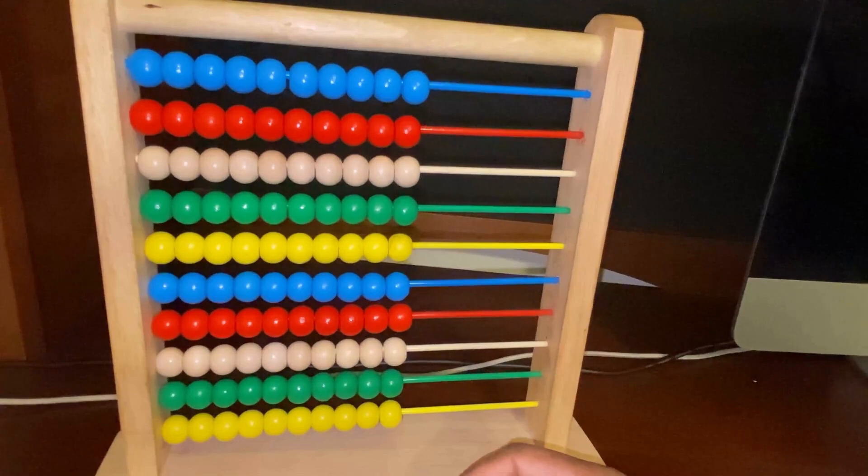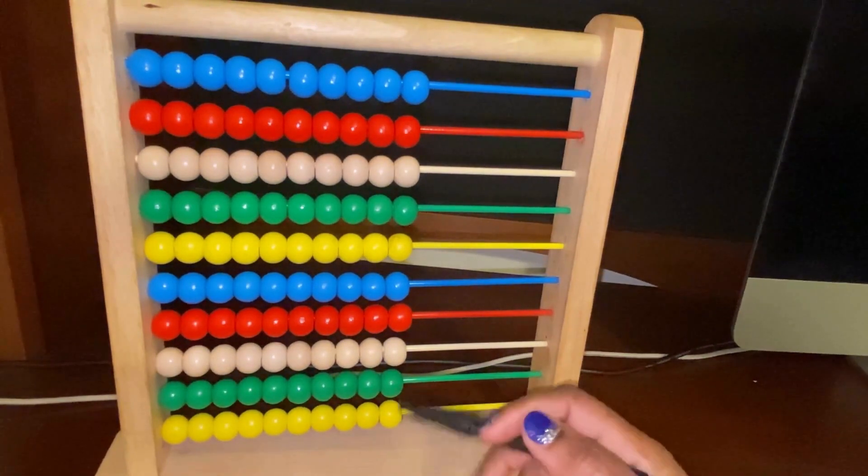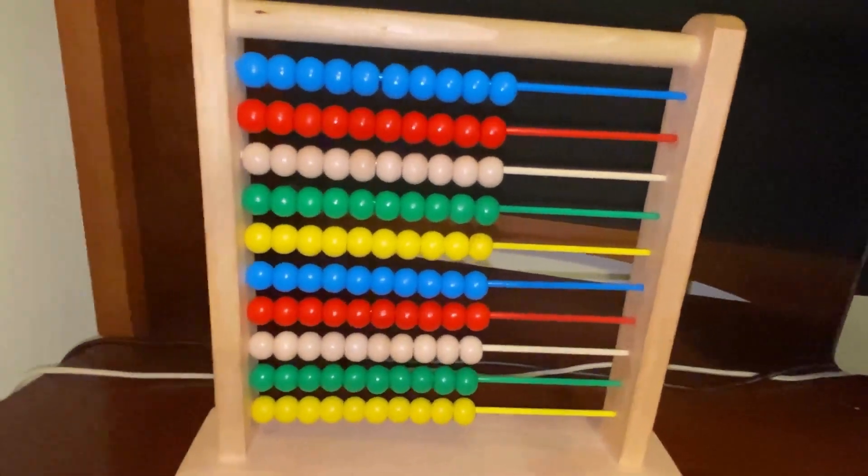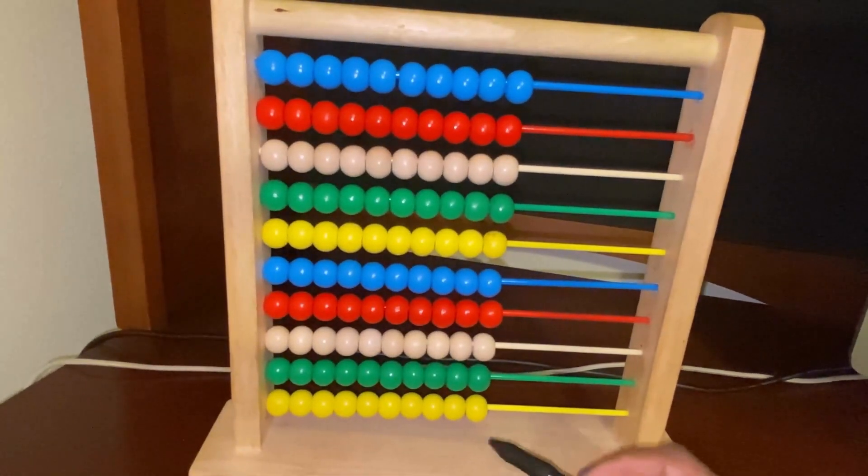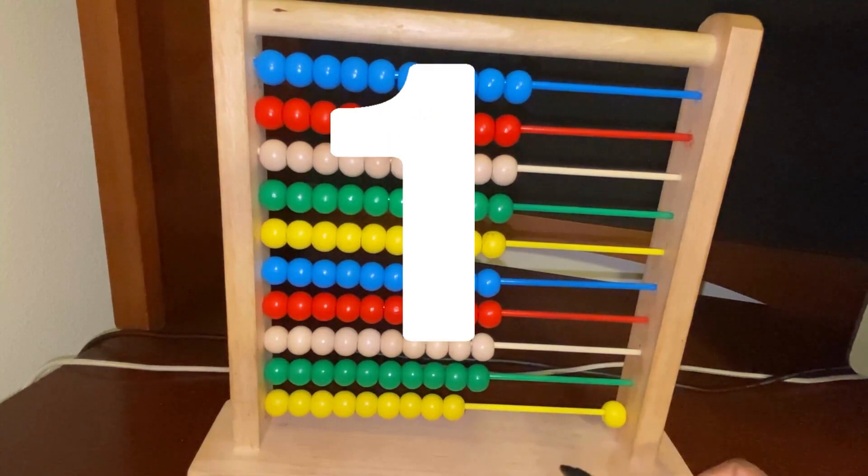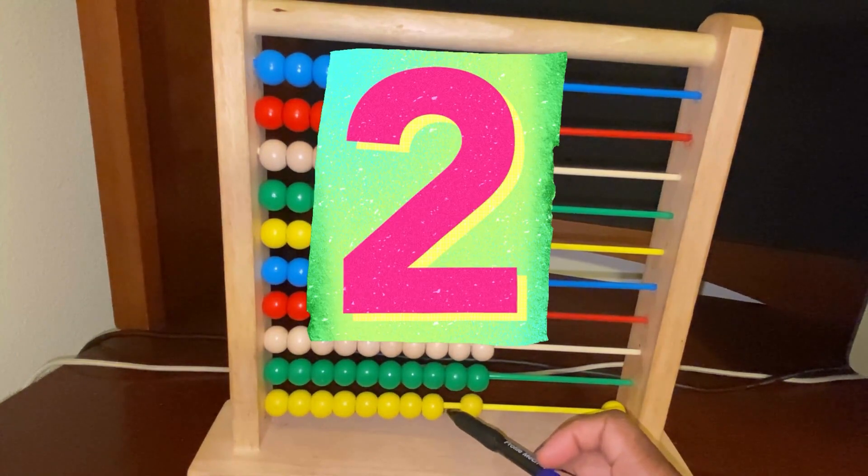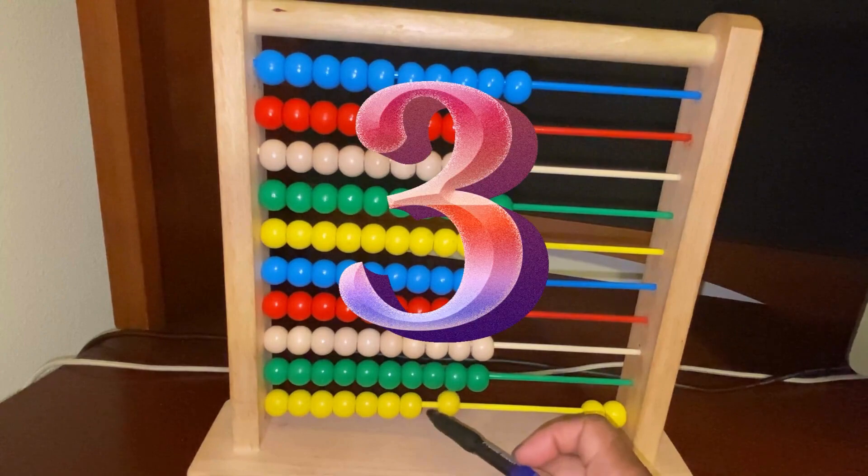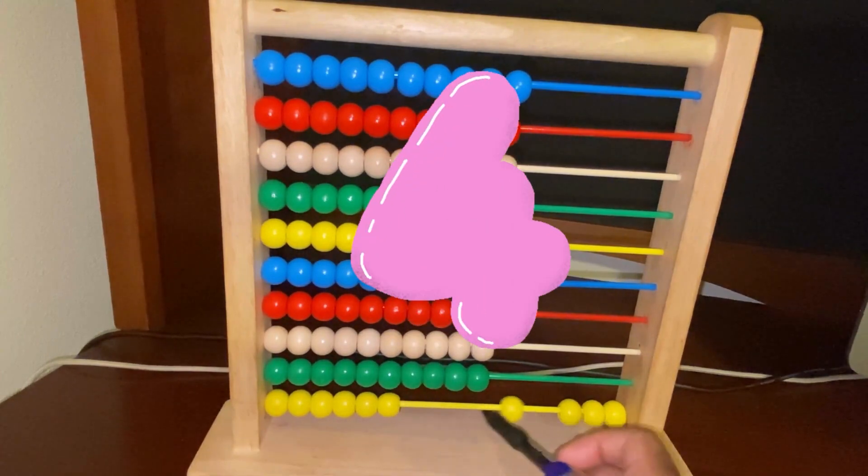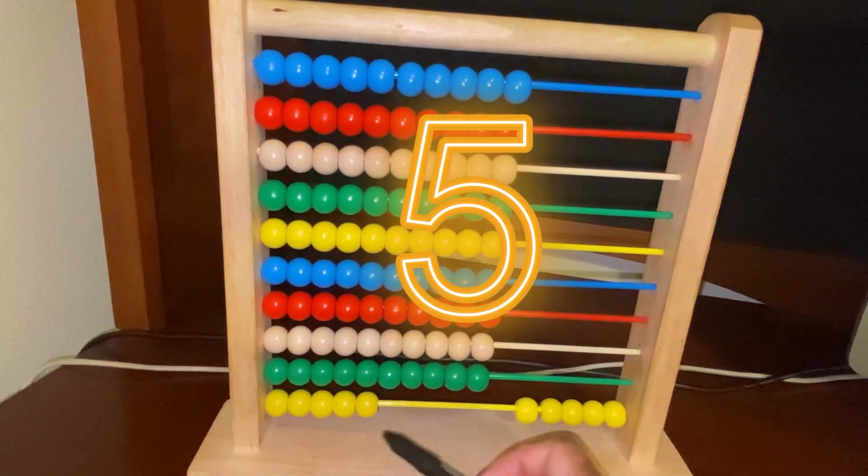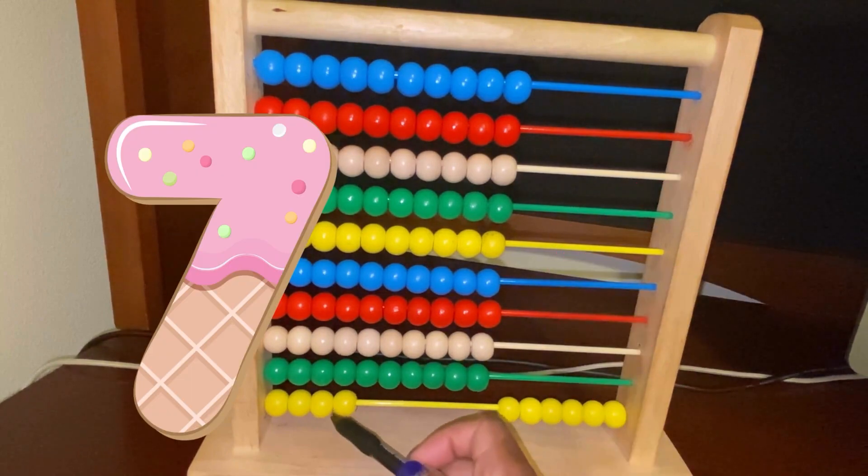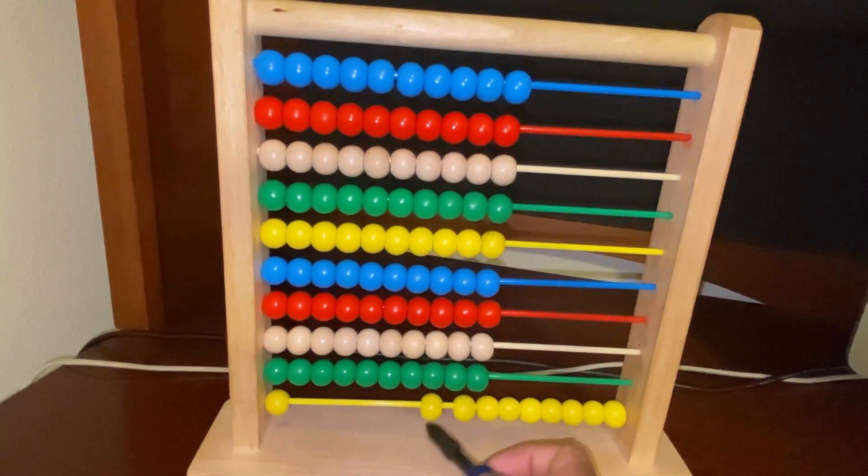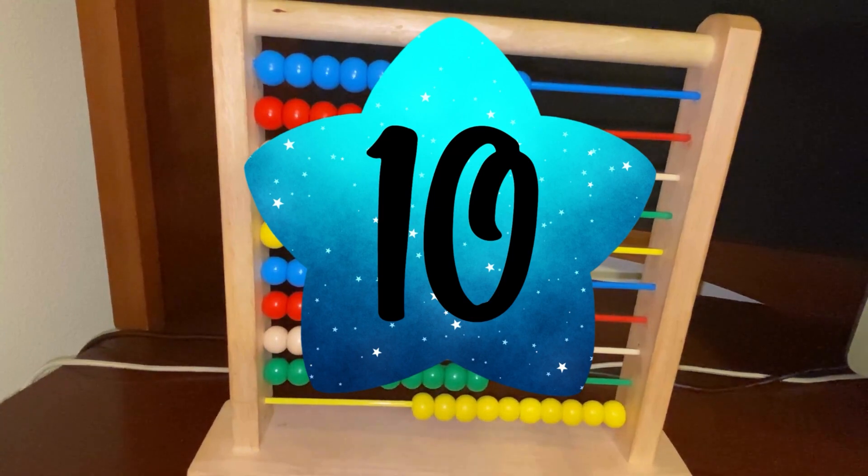So I have my four-year-old here. She's in preschool. We're going to try and do addition with the abacus. All right. So what is this? One. Good. Louder. Two. Three. Four. Five. Six. Seven. Eight. Nine. Ten. Great.